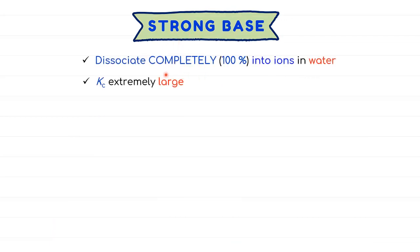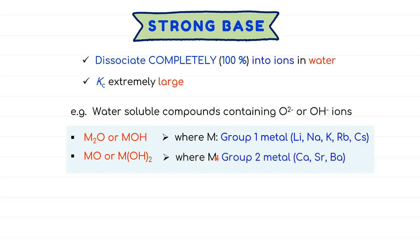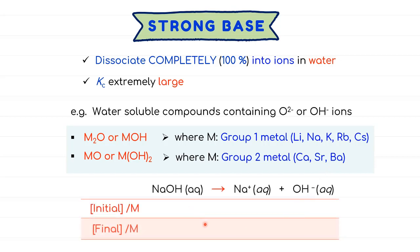Strong base dissociates or ionizes completely in water just like strong acid. So the Kc is expected to be very large. The example of strong base are water soluble molecules containing O2- or OH- ions. So they are M2O or MOH, where M will be the group 1 metal such as lithium, sodium, and potassium. For this one, MO or M(OH)2, the M will be group 2 metal. So we have calcium, barium. So let's say we're going to have 0.5 molar sodium hydroxide to dissociate in water to form sodium ion and hydroxide ion. Once these reactions undergo complete dissociations, the concentrations of product will become 0.5 molar each.